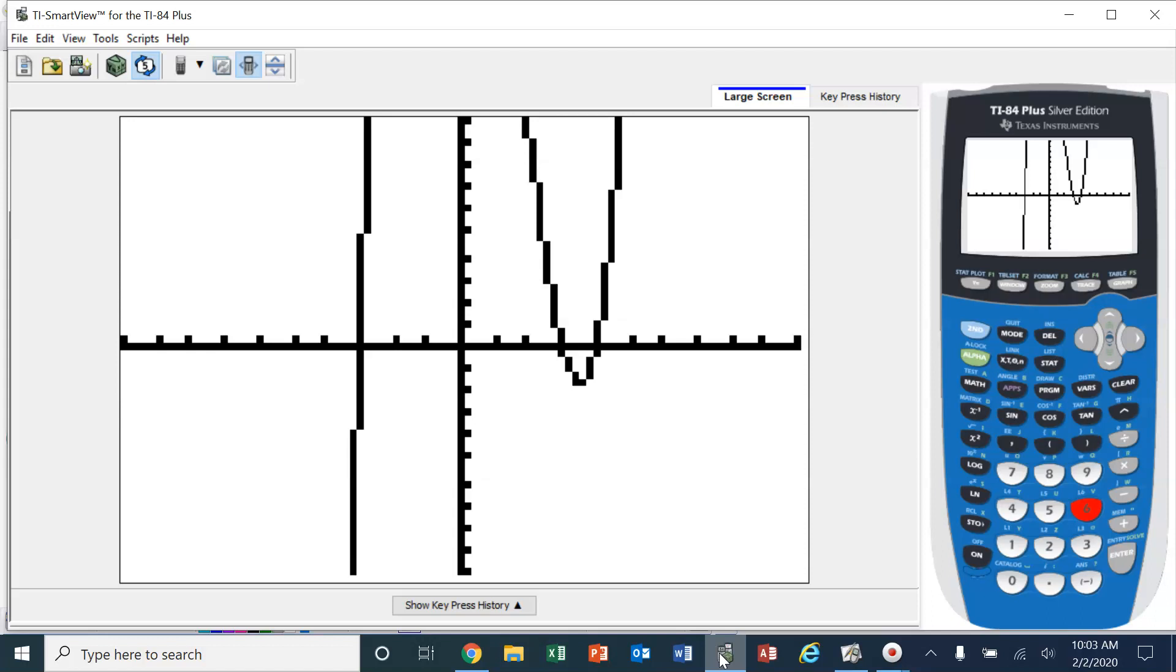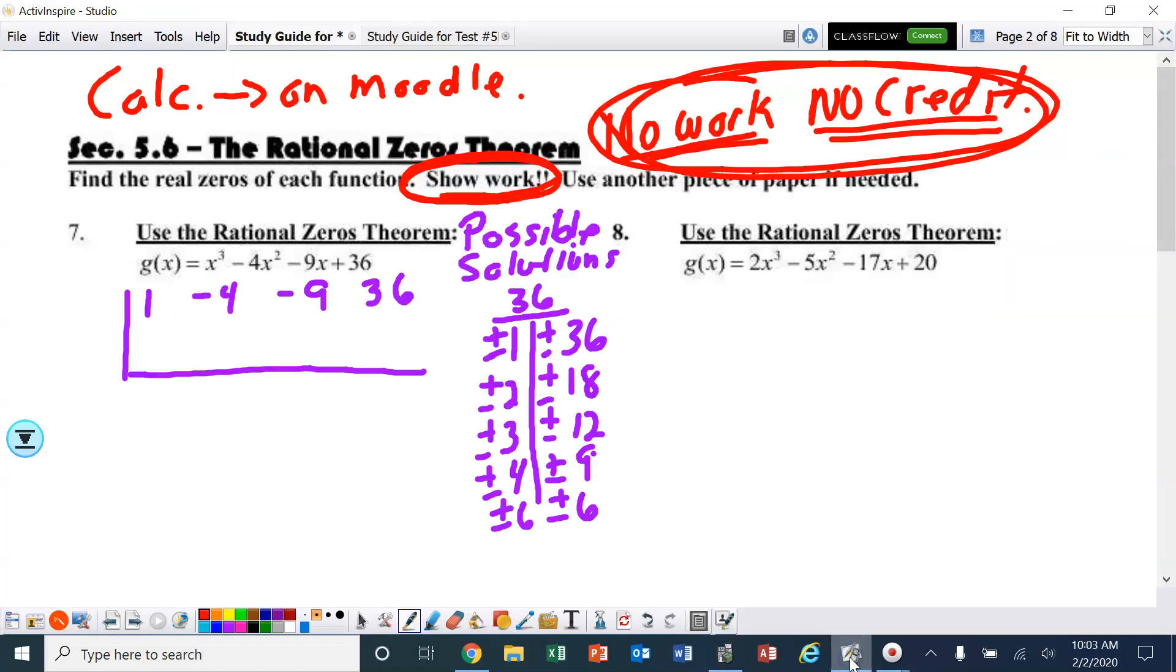I'm going to use the -3. That is one of my solutions. I'm going to bring the 1 down, multiply, add, multiply, add, multiply, and I have to end up with a 0. I must end up with that 0.